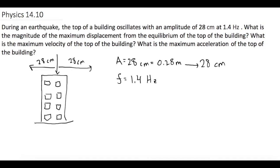Now they want to know what is the maximum velocity at the top of the building. Well we're going to use the equation V_max is equal to 2π times your frequency times your amplitude.